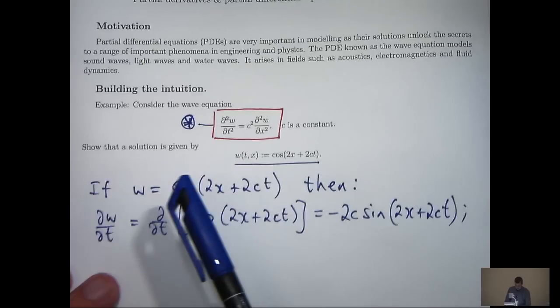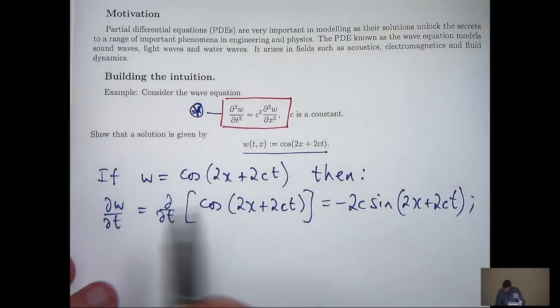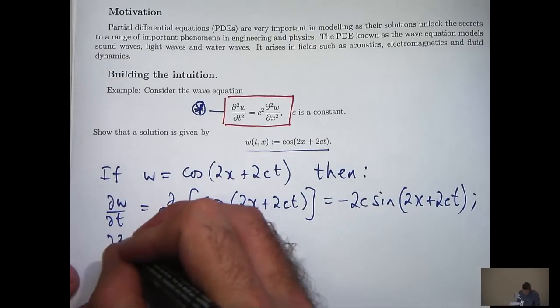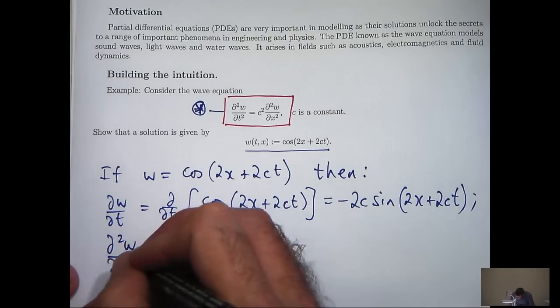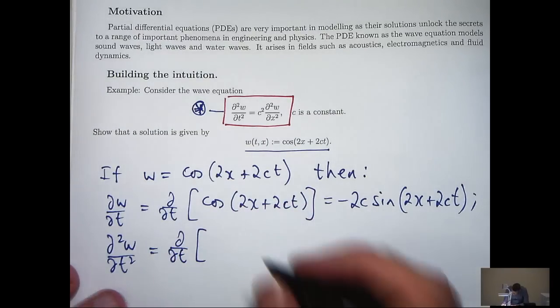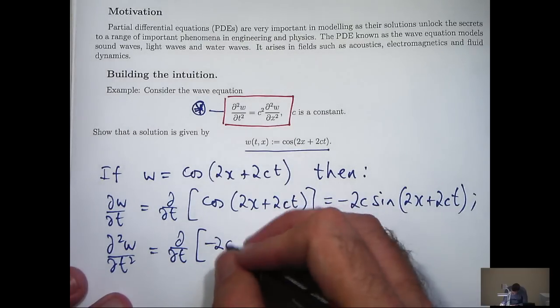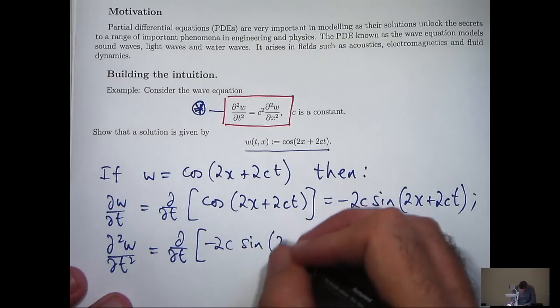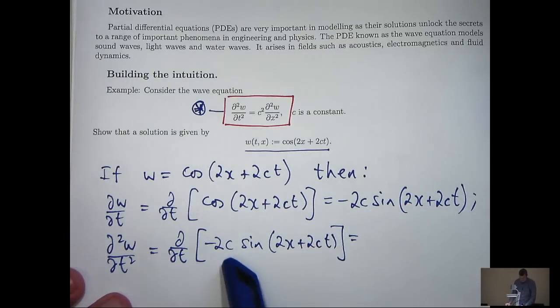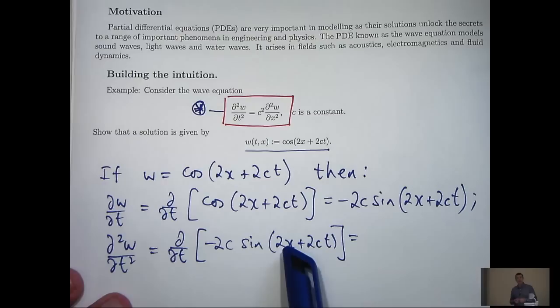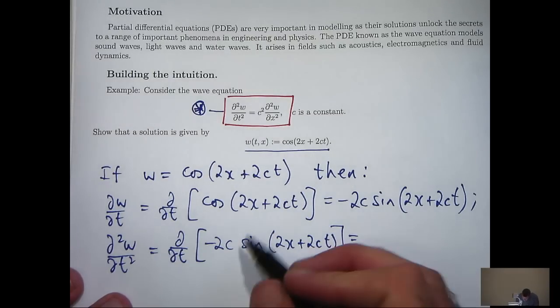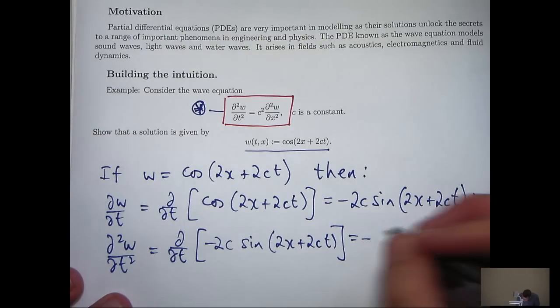Let's calculate the second order derivative, ∂²w/∂t². So we go back to this derivative and differentiate partially with respect to t. Again, imagine the variable x is a constant, c is a constant anyway, and differentiate normally with respect to t. So that 2c is going to come to the front again, and sine will go to cosine.